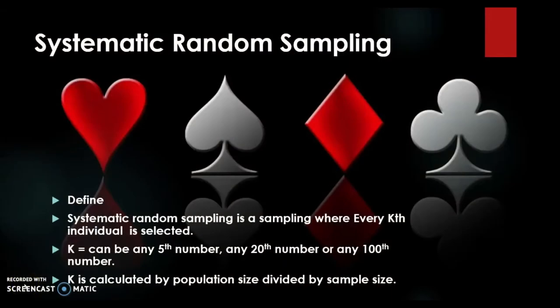The second type of sampling is systematic random sampling. Systematic random sampling is a sampling where every kth individual is selected. K can be any fifth number, any 20th number, or any hundred number. K is calculated by the population size divided by the sample size.